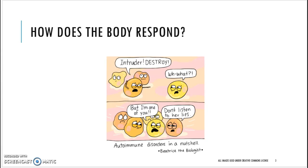Hashimoto's thyroiditis is an adaptive response to what the immune system believes is a foreign substance attacking your body. Unfortunately, the white blood cells are mistakenly treating normal, healthy tissue of the thyroid as something foreign. The body then begins to produce antibodies against the perceived invader. Antibodies produced in an autoimmune disease are known as auto-antibodies. In people with Hashimoto's, the most common antibodies are the thyroid peroxidase antibodies, or TPO.